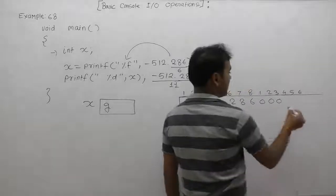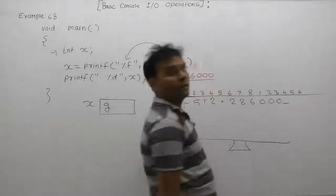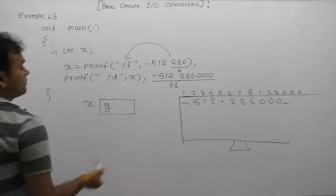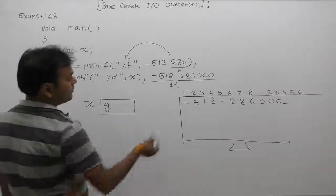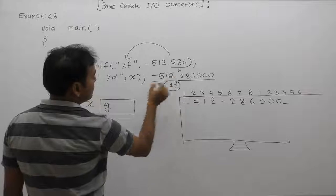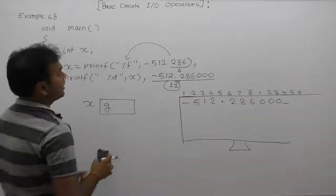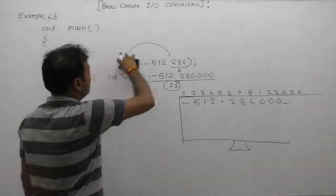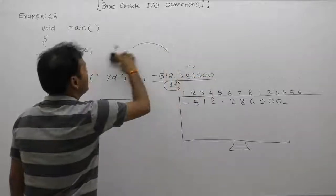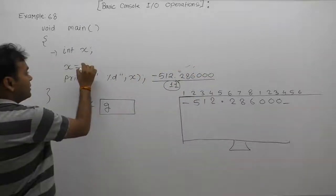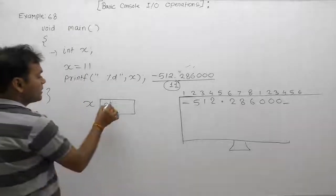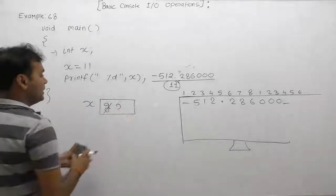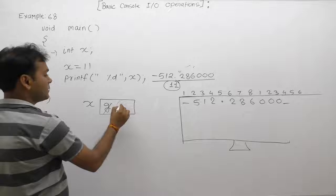Next, it will return the number of displayed symbols. How many symbols got printed? There are eleven symbols. Therefore, the return value of this printf function is eleven. This is assigned inside variable x. Now the value of x becomes eleven.